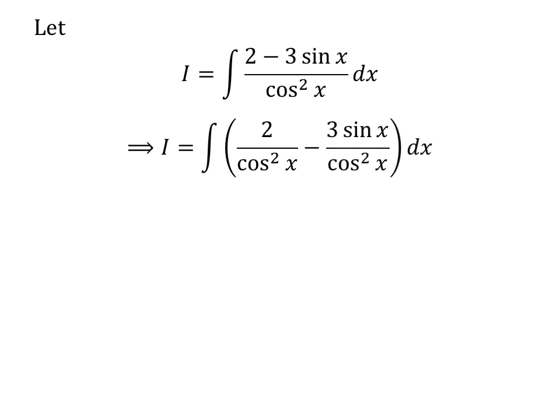We can write the integration as difference of two fractions. So, I is equal to integral of 2 upon square of cosine of x minus 3 times sine of x upon square of cosine of x with respect to x.